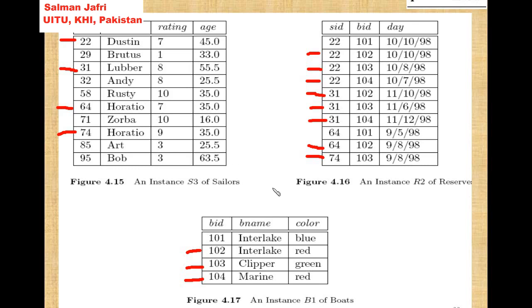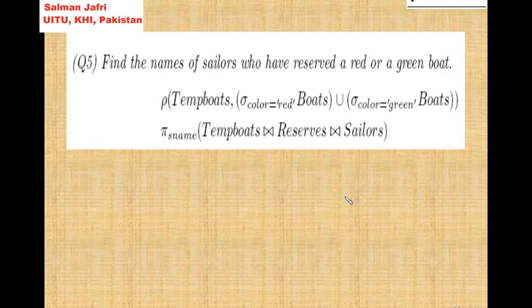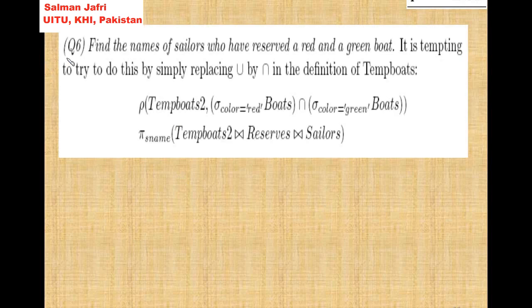Finally, we project only the sailor name. Rows one, two, three, and four are the row selections in this result. Now let's take a look at question 6: find the names of sailors who reserved both a red boat and a green boat.